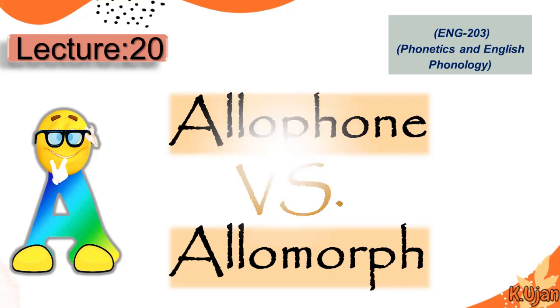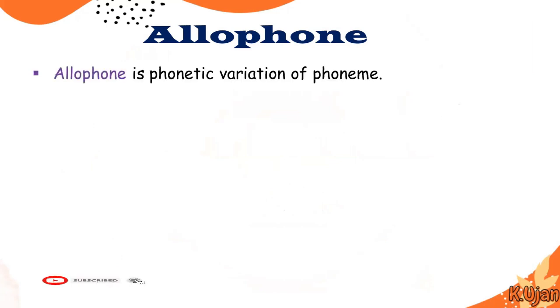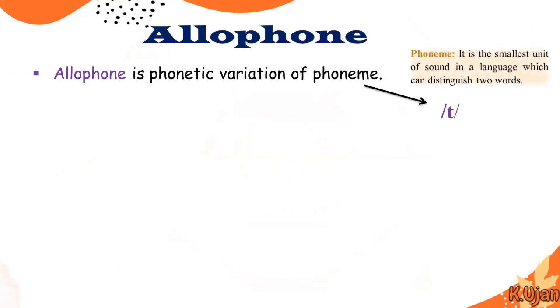Before we make other distinctions, let's define allophone. In simple words, an allophone is a phonetic variation of a phoneme. And what is a phoneme? A phoneme is the smallest unit of sound in a language which can distinguish two words.